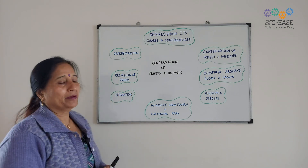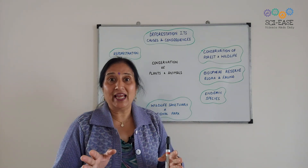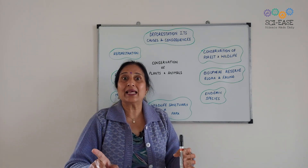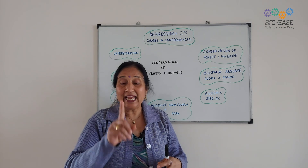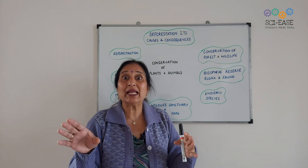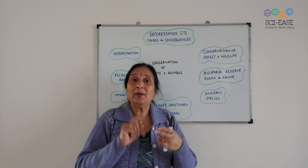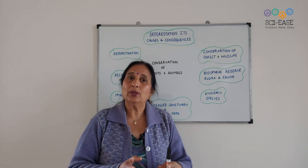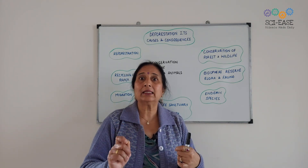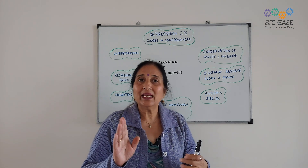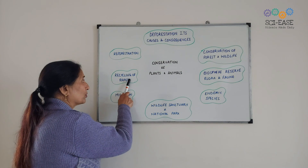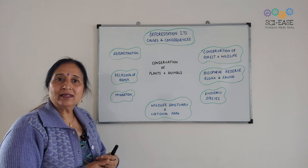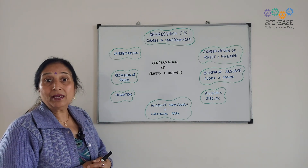Next, I will tell you about recycling of paper. 1 ton of paper is equal to 17 large trees. This is why we should not waste paper, and we should recycle it. I will explain how many trees are needed and why paper recycling is important.